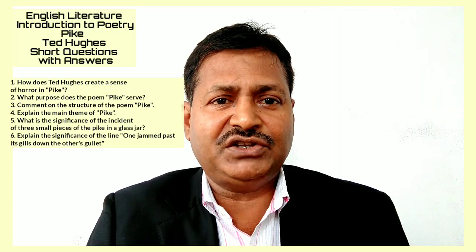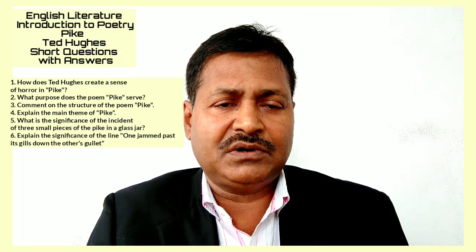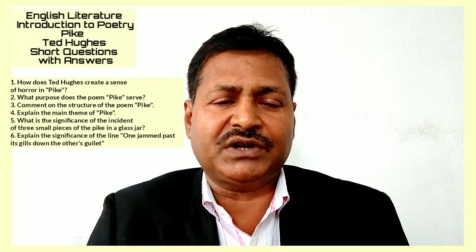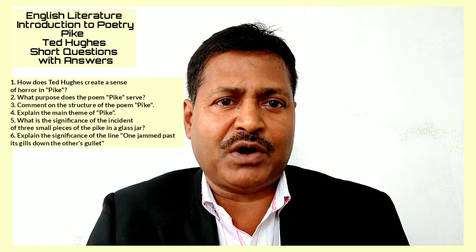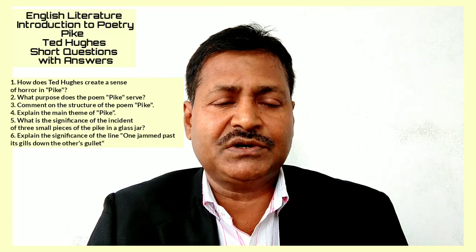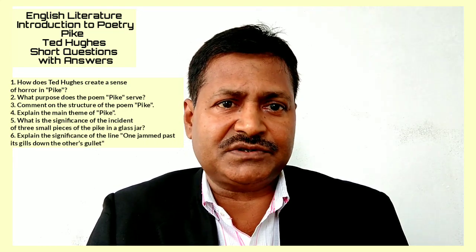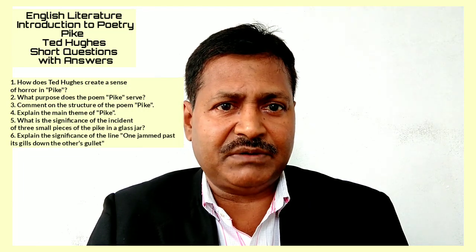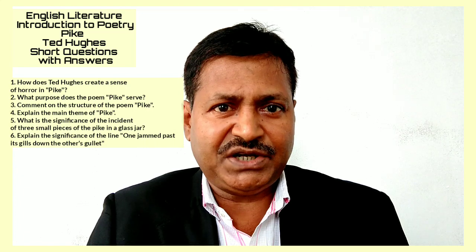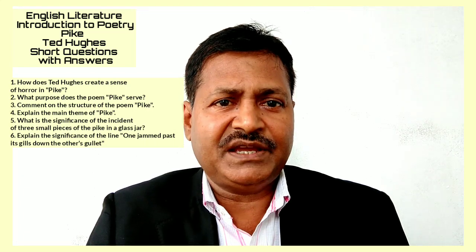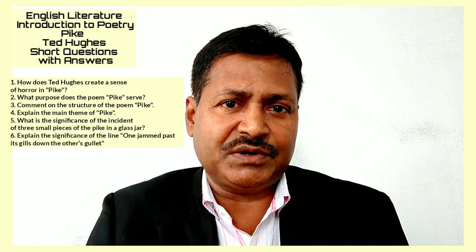Question 4: Explain the main theme of Pike. Darwin's controversial theory of survival of the fittest is the main theme of Pike. Ted Hughes' poetic presentation is quite convincing. The poem vividly captures the violence and cruelty prevalent in the animal world. The pike is a predator — it lives on other fish, and its killing instinct is inborn.